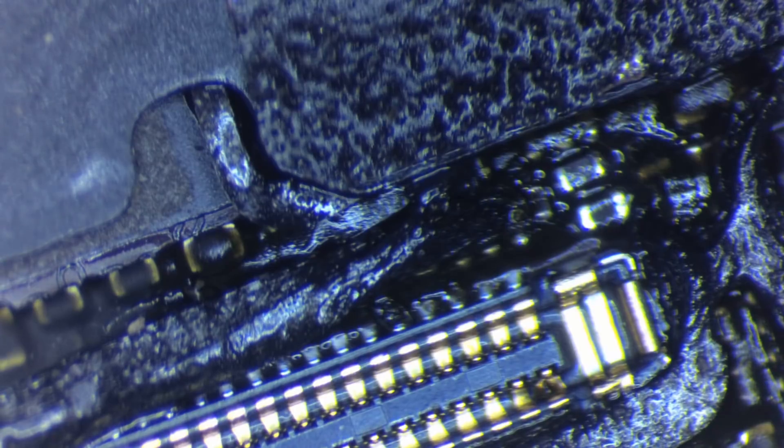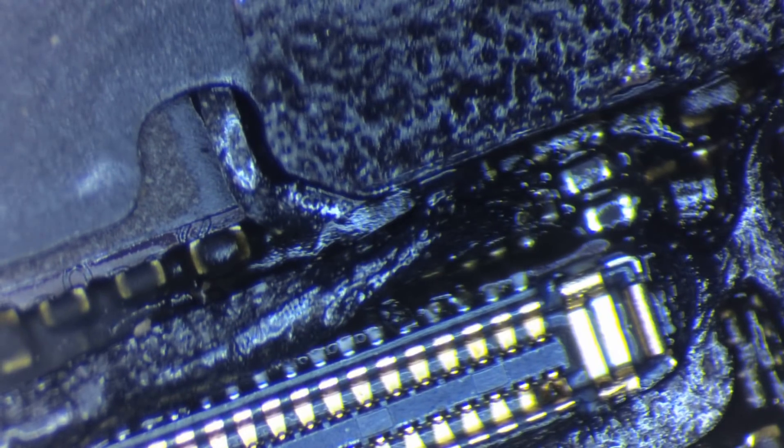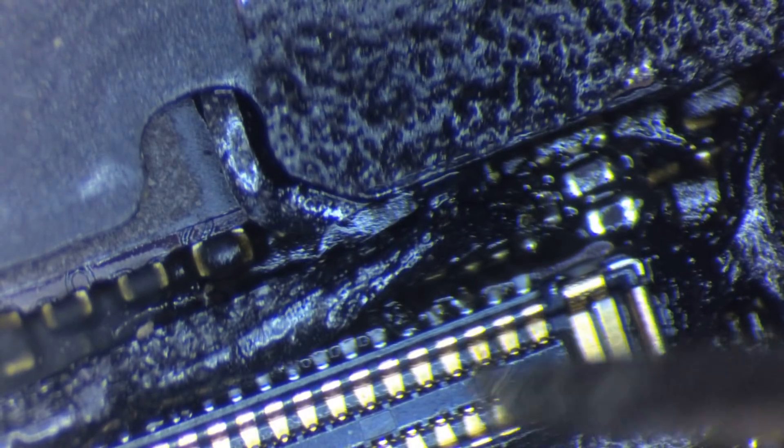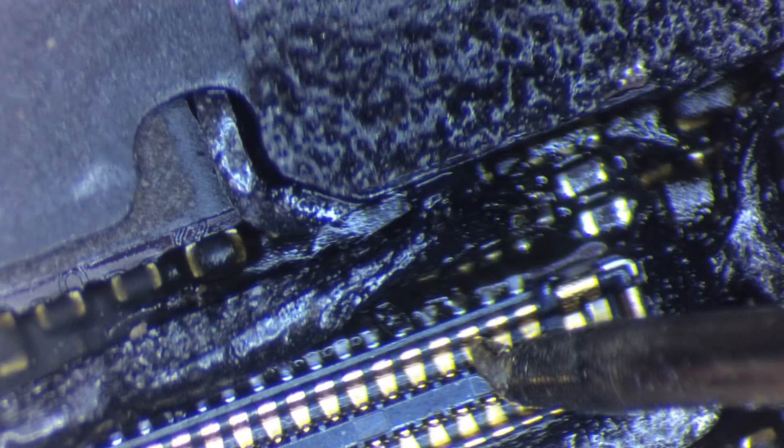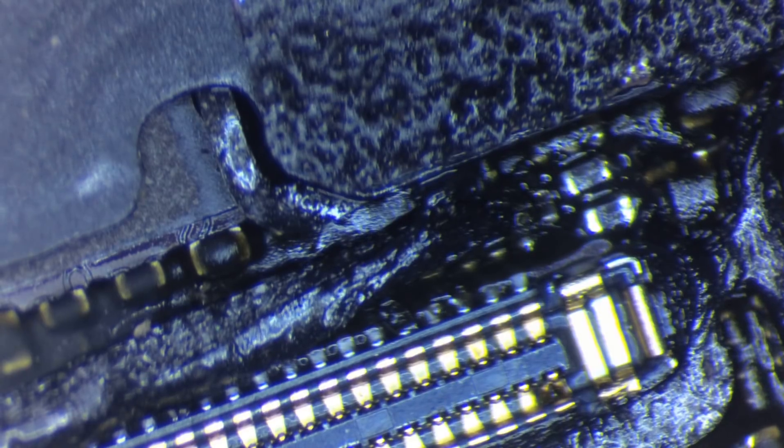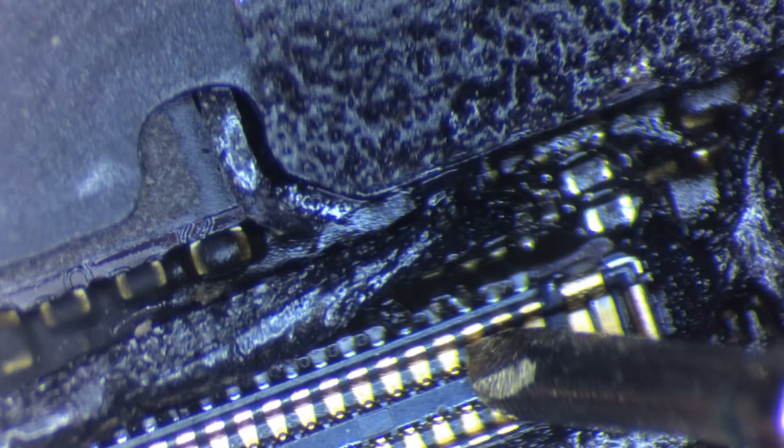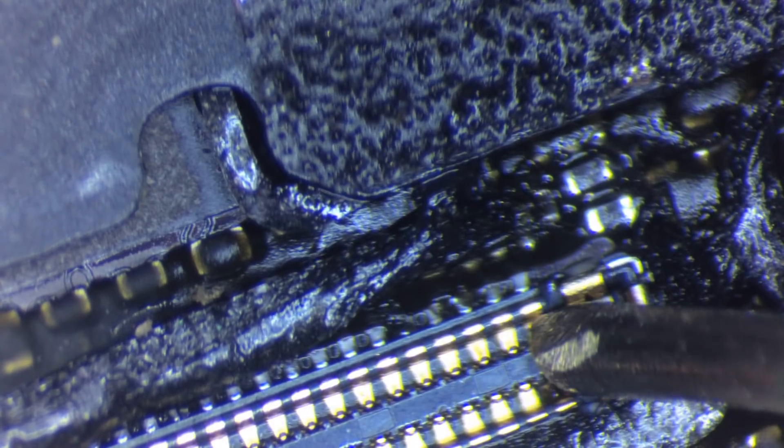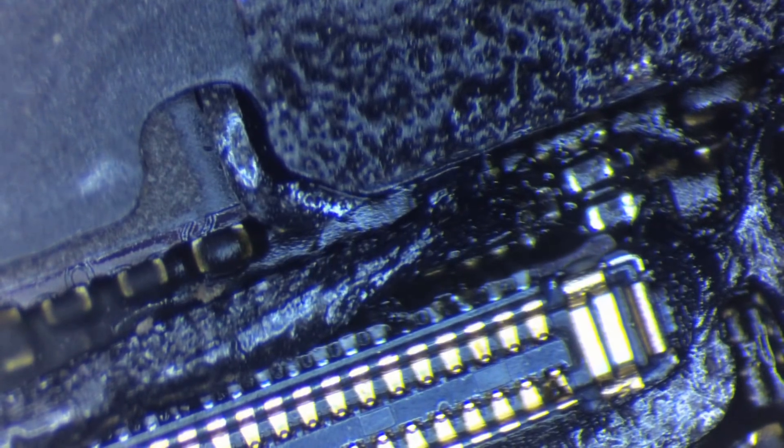And you also really want to check the two cathode pins just to make sure you don't have any shorts. So one side to ground and then one side to the left side. I got 0.616 on both sides, so I know that's good. And I know this is going to be a wonderful repair.